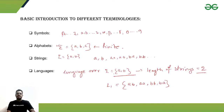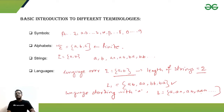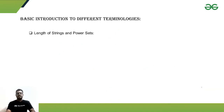A language can be finite or infinite. The previous example was a finite language. As another example, consider a language of all strings starting with 'a' — the strings can be 'a', 'aa', 'ab', 'aaa', and so on. You can see that this set of strings is infinite, so the language is also infinite.